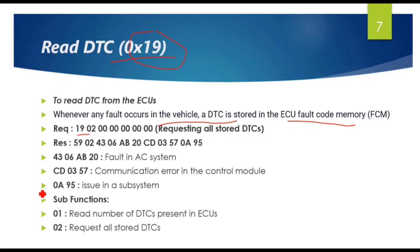Let's take an example. I would like to request all stored DTCs from the ECUs, so I'm sending this request. In response I will get 59 02 - that is 40 plus added - and these are the DTCs. What does 43 06 AB 20 mean? It is basically a fault in the AC system.